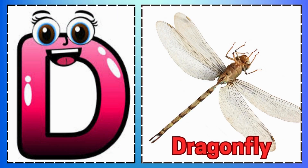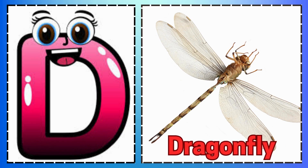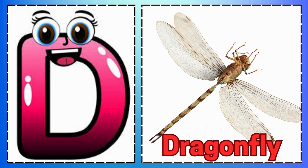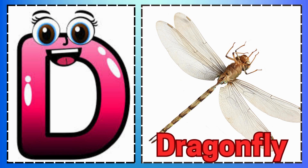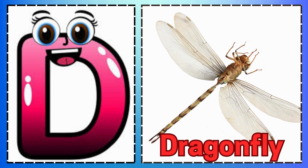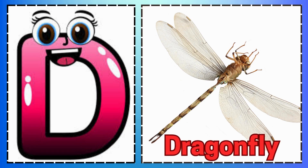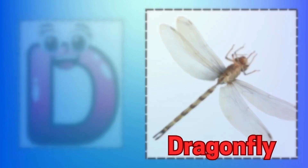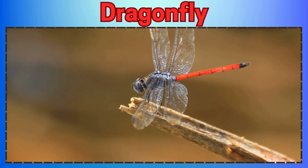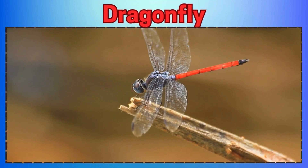D is for Dragonfly. S is for Stick Insect. T is for Termite Building Homes so Big.